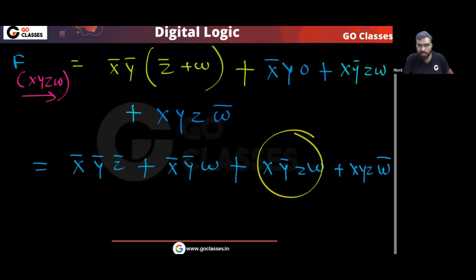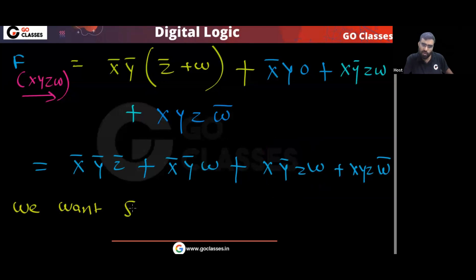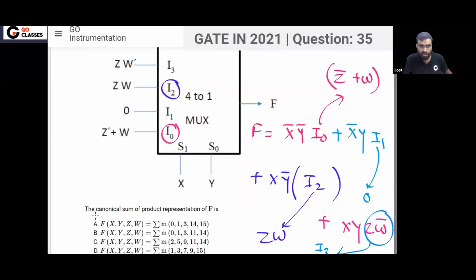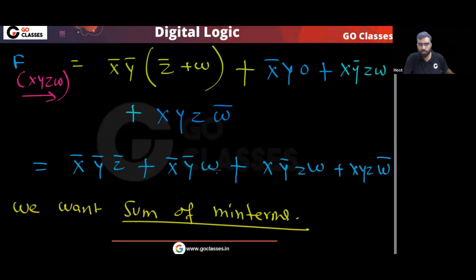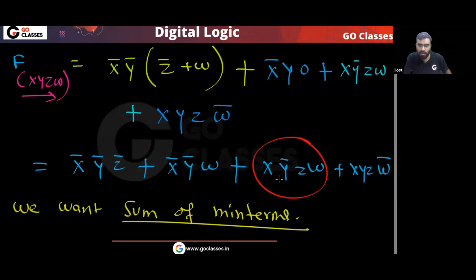We want the canonical SOP, which means sum of minterms. A minterm is a product term containing all the variables. We need to check which terms are already minterms and which are not.